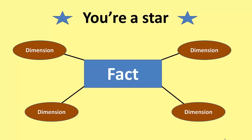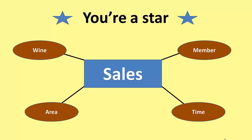How is the data held? It's held as a star. In the middle you have a fact, and this fact is linked to a number of dimensions — here I've got four, but you could have three or 23. For example, you might have sales as the item in the middle. For each sale, you have the member ID, wine ID, area ID and time ID. Time is needed so you get the idea of trends. Now, one member may have bought many things, but this is in second normal form, so even though one member has bought, say, three items, that member's details are now going to be recorded against each of those sales.